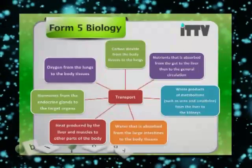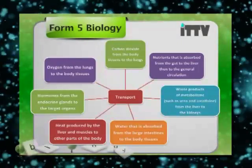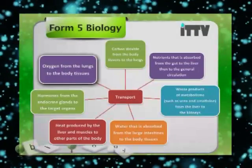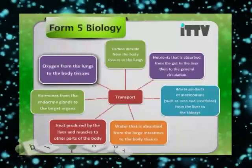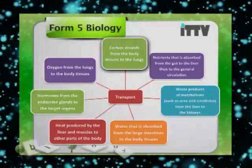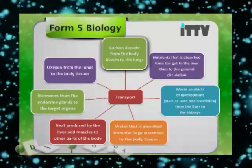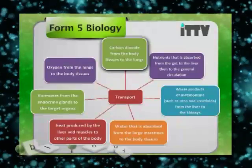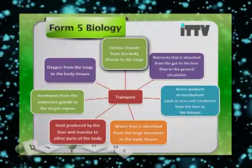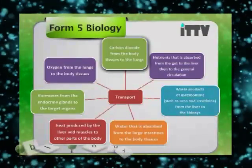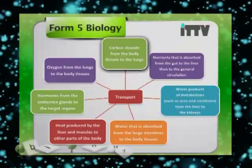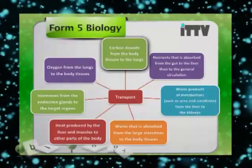Now let us take a look at blood as the medium of transport and its various functions. Oxygen from the lungs is transported to the body tissues in the form of oxyhaemoglobin. Blood also transports carbon dioxide from the body tissues to the lungs — approximately 70% in the form of bicarbonate molecules, 23% as carboxyhaemoglobin, and 7% as dissolved carbon dioxide in the blood.